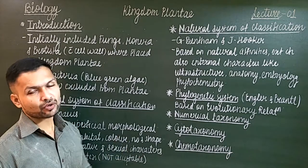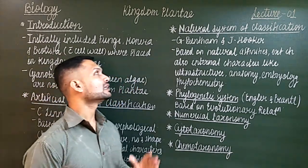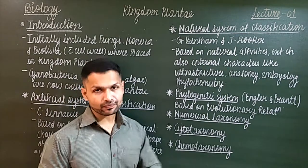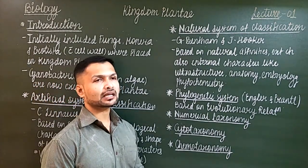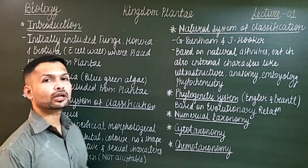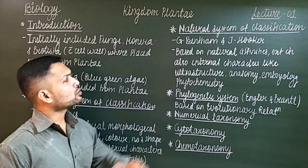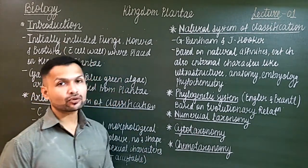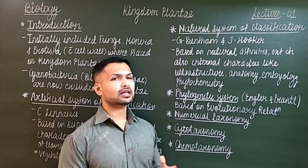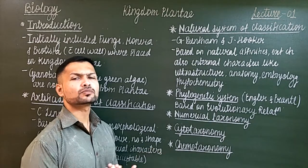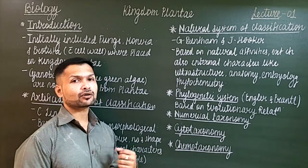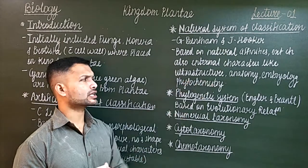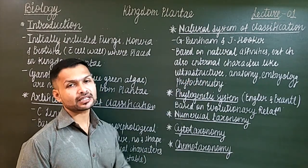A better system was needed — the second system called the natural system of classification, given by George Bentham and Joseph Hooker. They considered more characters apart from Linnaeus's system. It was based on natural affinities, external characters, and also internal characters like ultra structures, anatomy, embryology, and phytochemistry. Natural affinities means similar and dissimilar naturally observable features. Internal characters included placentation of ovary — how ovules are arranged in the ovary, the shape of the ovary, then anthers, whether they are adhered to the petals or not.